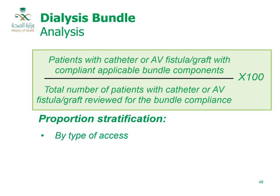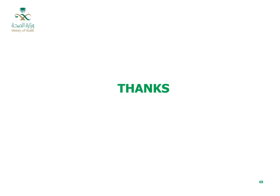To calculate dialysis bundle compliance, divide the total number of patients with catheter or AV fistula/graft who are compliant with all applicable bundle components by the total number of patients with catheter or AV fistula/graft reviewed for bundle compliance, then multiply by 100. It is also possible to calculate compliance per each vascular access type. Thank you for listening, and see you again in an upcoming lecture.